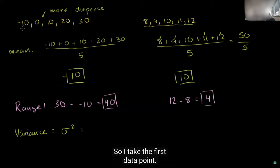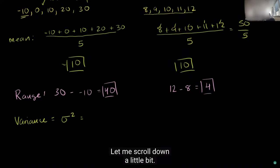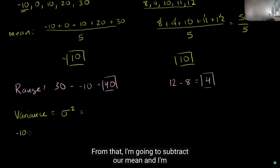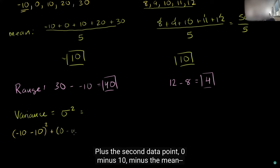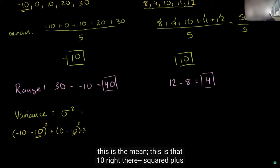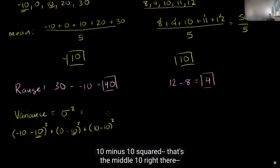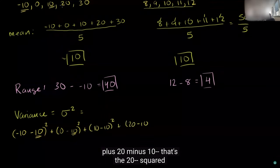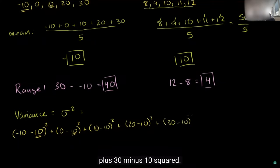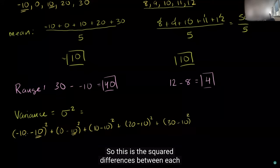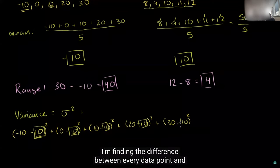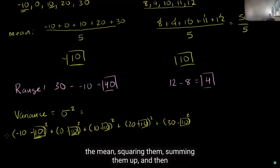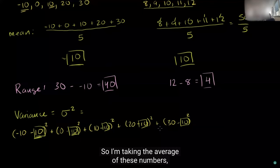The mean here is 10. So I take the first data point, negative 10, subtract the mean, and square it: (negative 10 minus 10) squared. Plus (0 minus 10) squared. Plus (10 minus 10) squared. Plus (20 minus 10) squared. Plus (30 minus 10) squared. Then divide by 5. I'm finding the difference between every data point and the mean, squaring them, summing them up, and dividing by the number of data points — taking the average of the squared distances.